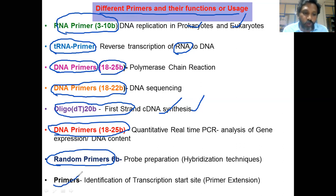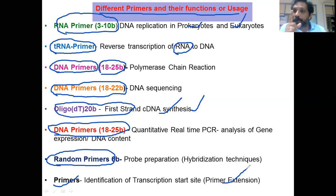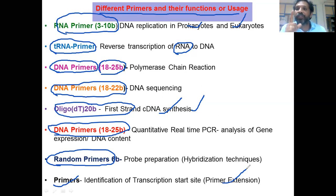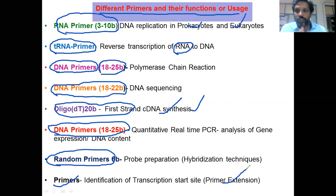Primers are also used in the primer extension technique, which is used to detect the 5' transcription start site. To know the location of a transcription start site, complementary DNA is synthesized using a primer, then sequenced to understand both the 5' and 3' transcription sites.